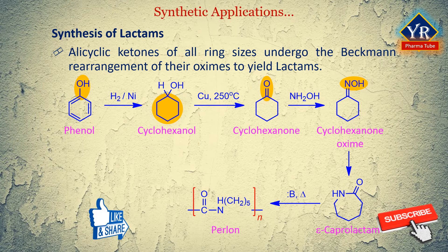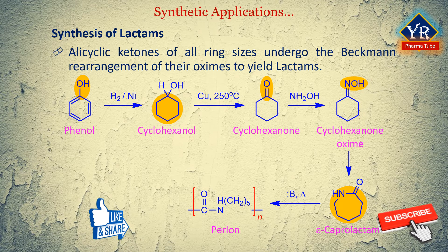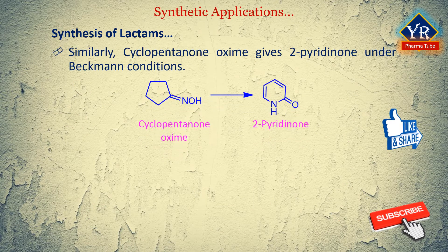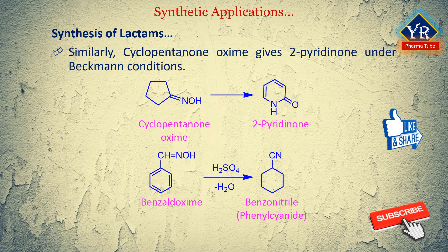A product of considerable industrial importance is Perlon, a valuable textile polymer which is prepared from epsilon-caprolactam. This is obtained by the Beckman rearrangement of cyclohexanone oxime, synthesized from phenol as shown here. Similarly, cyclopentanone oxime gives 2-piperidone under Beckman conditions. Aldoximes under Beckman reaction conditions undergo dehydration to nitriles.